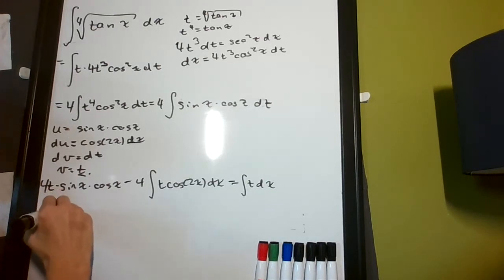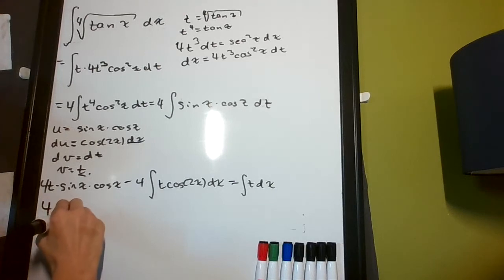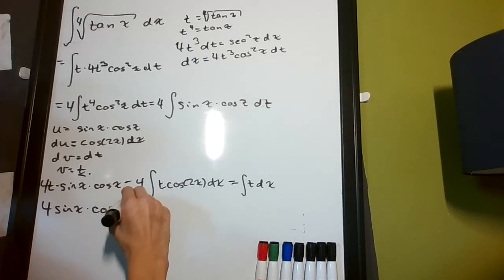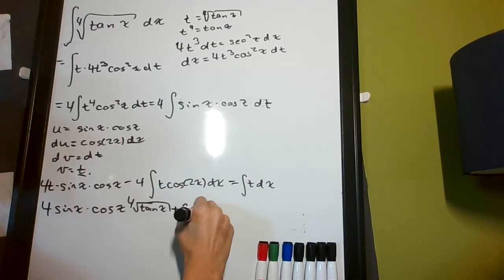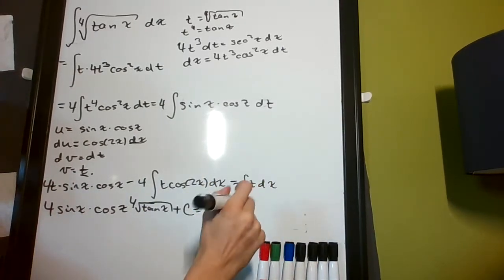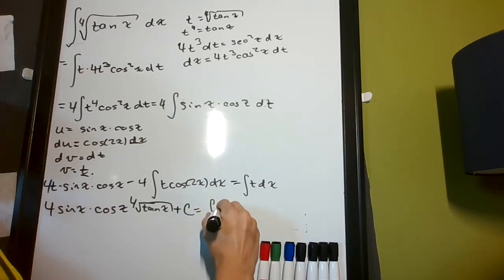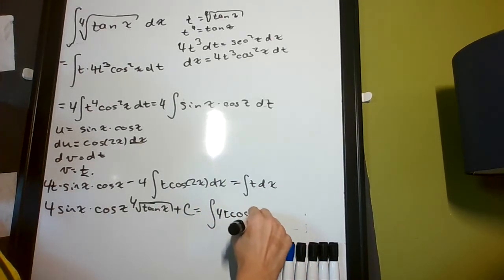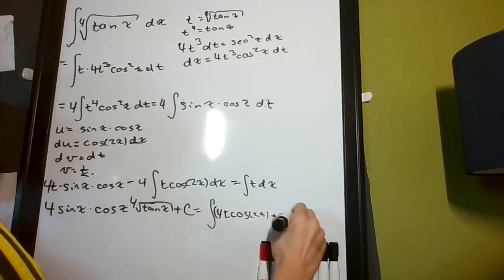So, I get 4, I'm going to plug in for t here, 4 sine of x, cosine of x, 4th root of tangent x. It's going to be plus c, plus c, it's going to be the integral of, and then you're going to have, add it to both sides. So, I get 4t cosine 2x plus t dx, right?